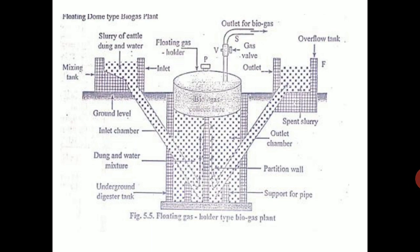In the center you have the biogas drum which floats — it's not fixed; it can move up and down. As gas is filled it goes up, when the gas is used it comes down. On the left you can see the mixing tank at the top, where you mix the cattle dung and water slurry. A pipe connects to the inlet chamber. The slurry mixing tank and overflow tank are above ground level; otherwise the entire equipment is below ground level.